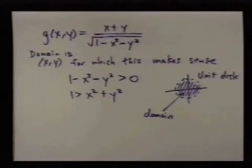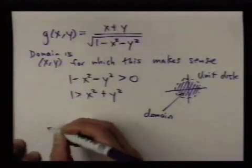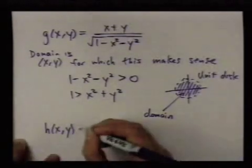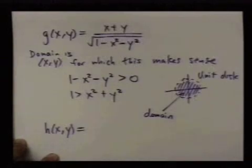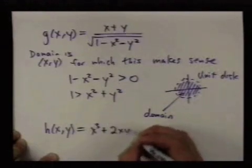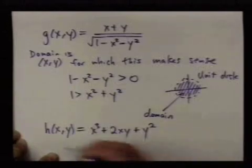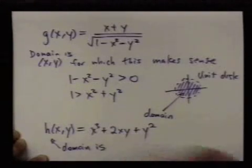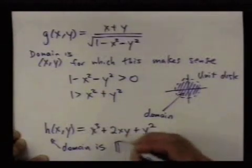But this is very similar to one variable. You just have to make sure that all the things you write down make sense, and the domain is typically just the values for which it does. Most of the functions we'll be using will be formed using polynomials and exponentials and sines and cosines. And there, there's no problem. The domain of something like this, the domain of this function is the entire plane, which we write as R2.